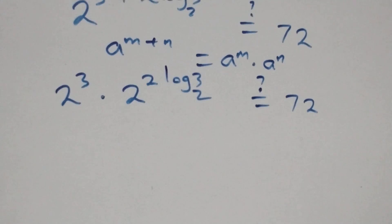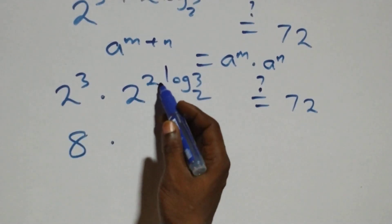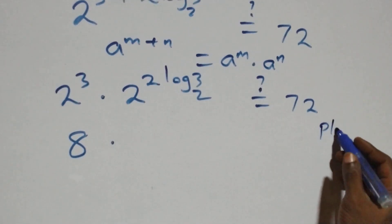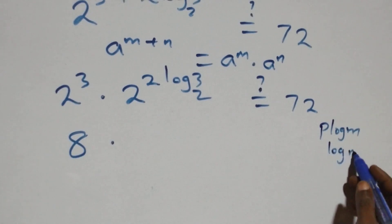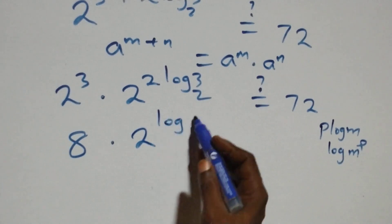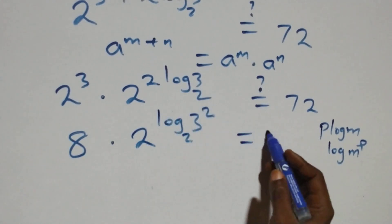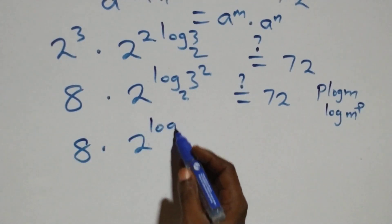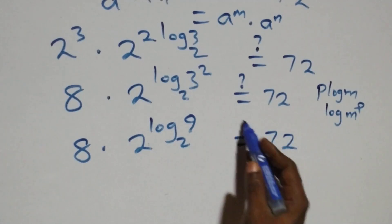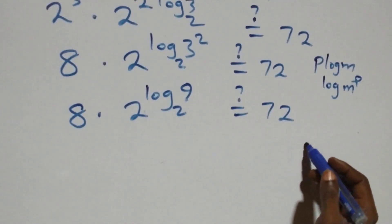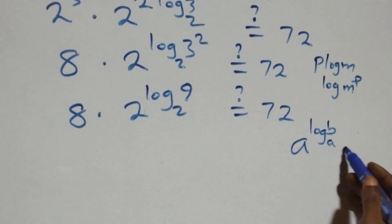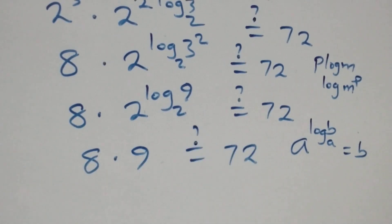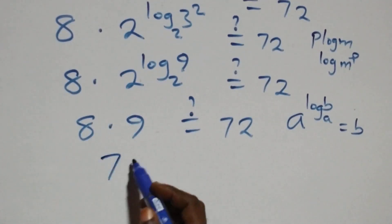Now, 2 raised to power 3 equals 8. Then for the second factor, we reverse the power rule: p log m is the same as log m raised to power p. So 2 raised to power (log 3 squared base 2) equals 8 times 2 raised to power (log 3² base 2). Applying the identity a raised to power (log_a b) equals b, we get 2^(log₂(3²)) equals 3² equals 9. Therefore 8 times 9 equals 72, which matches the right-hand side. The left-hand side equals the right-hand side.